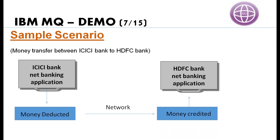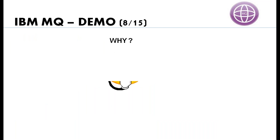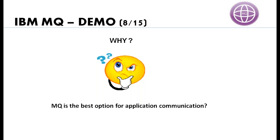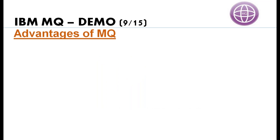In these kinds of situations, IBM MQ is the best fit. These two applications — ICSA and HDFC — need to communicate with each other over the network. When two applications must exchange information over the network, IBM MQ is the best solution. The question is: why is IBM MQ the best option for application communication? The answer is simple — the advantages provided by IBM MQ. First of all, IBM MQ provides asynchronous communication.